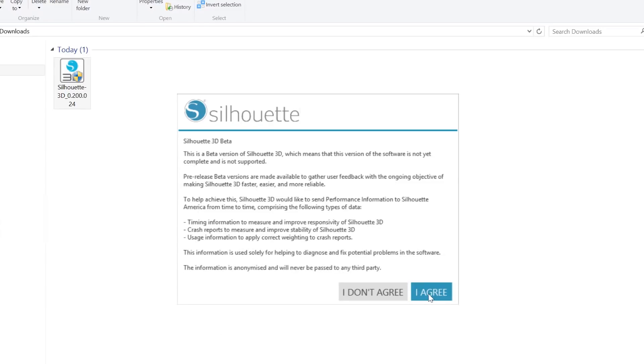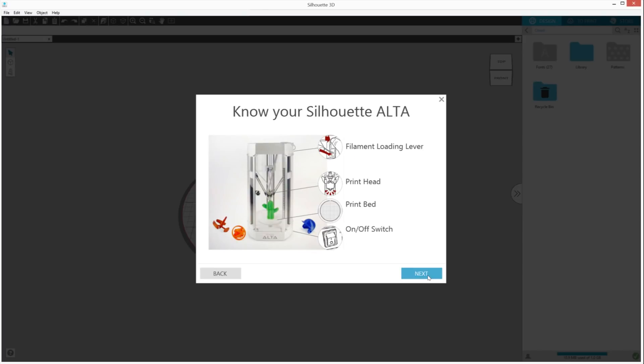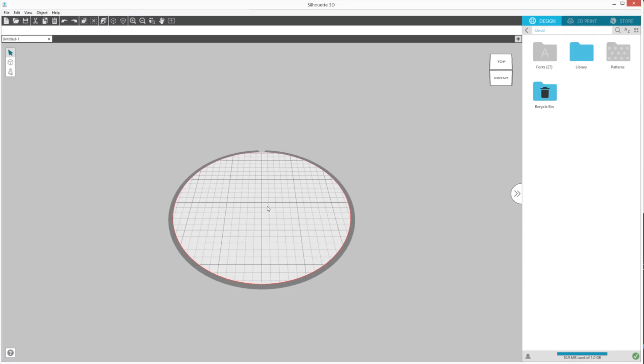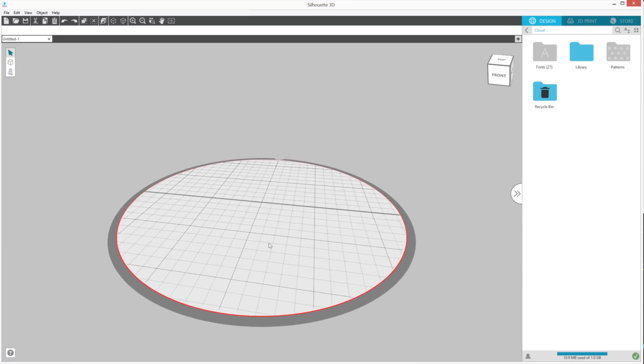The first thing you'll see when Silhouette 3D opens is a slideshow that walks you through removing the packaging from the Alta and where important parts of your machine are located. When you've finished with the slideshow, you'll note that there is the main screen that displays a circular area with a grid. This represents the Alta platform's print area.